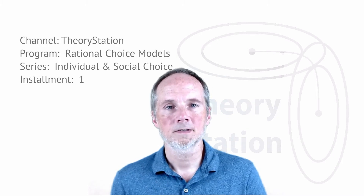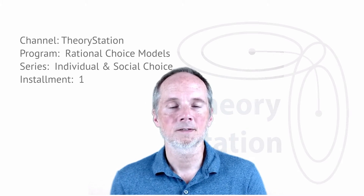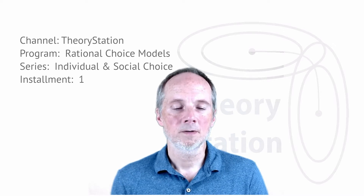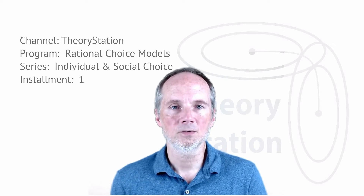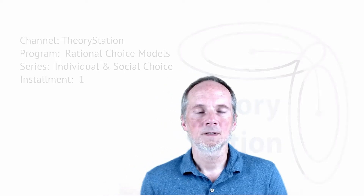Hi, this is Theory Station. I'm John Duggan, and this is the Rational Choice Modeling Program. The series we're in is called Individual and Social Choice. This is the first installment of the series, and this installment is going to be called Properties of Preferences.